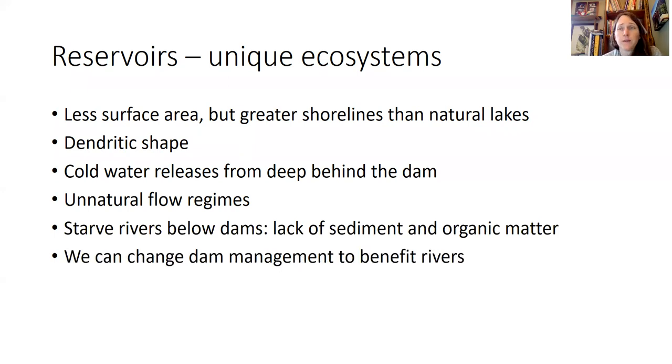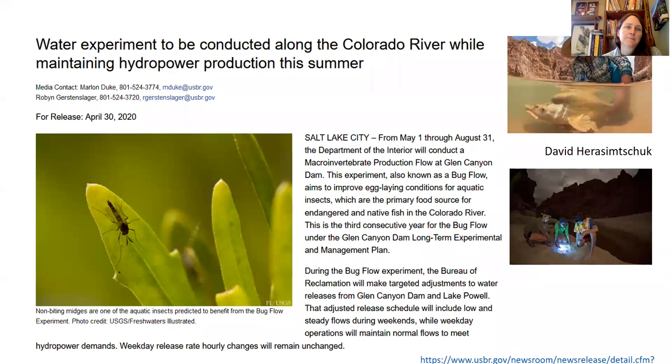We can change dam management to benefit rivers by introducing high flow events, having flow events timed with things like cottonwood seedling establishment and fish movement needs. Here's an example of an experiment on the Colorado river where they introduced these what are called bug flows. These really high flows that have a particular timing to them to allow for water to be high and then recede slowly and allow insects to lay their eggs in the wet mud and then allow enough time for those eggs to hatch to produce a lot of insects. These insects then feed fish in the streams.